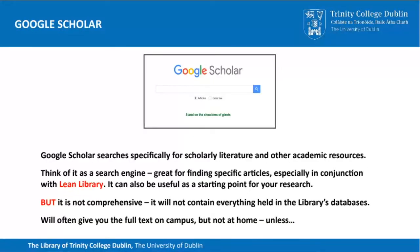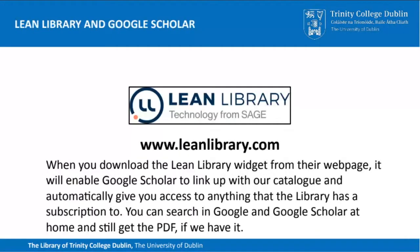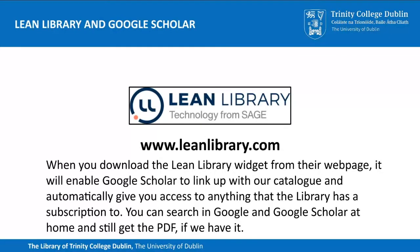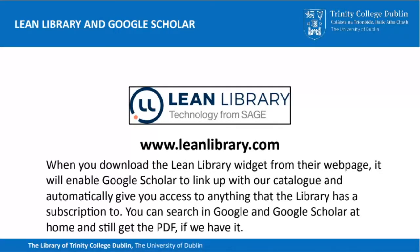If you are using Google Scholar, it's a very good idea to download a little widget called Lean Library. The URL is leanlibrary.com. What the widget does is it links the Google Scholar search with the Trinity College Library catalogue. So once you do a search in Google Scholar, if you're outside the campus, it will automatically give you access to anything that the library has a subscription to — a link to the full text of the article if Trinity College Library has a subscription to the database or journal the article was published in. So it's a nice little shortcut.